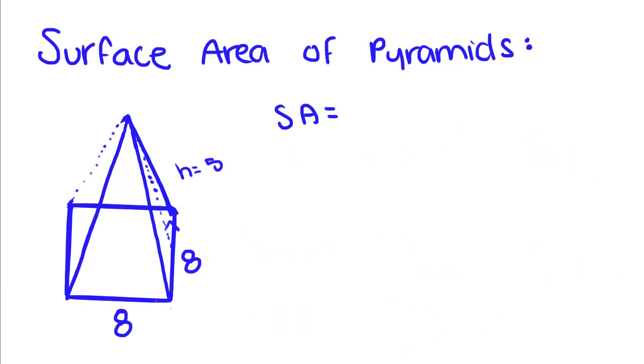Now let's do an example. Surface area is what we're trying to find. First, we find the area of the base, which is 8 times 8, plus 4 times one-half times base times height. They drew our height in and told us it equals 5.